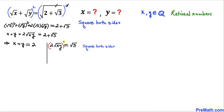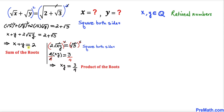Now let's take the square on both sides of this equation. On the left-hand side, 2 squared is 4, and the square and square root undo each other giving xy. On the right-hand side the square and square root cancel, giving simply 3. Dividing both sides by 4, we get xy equals 3 over 4. So the sum of the two roots equals 2 and the product equals 3 over 4.